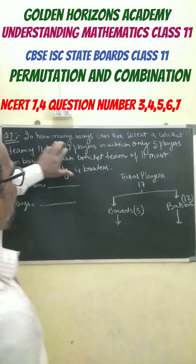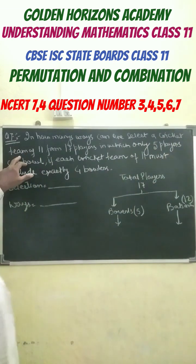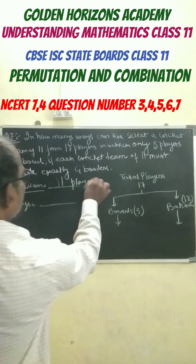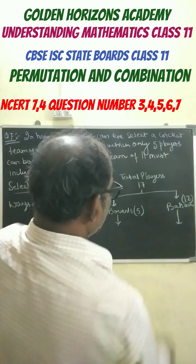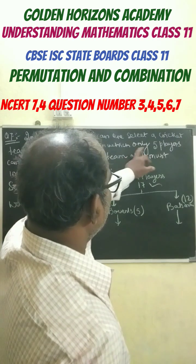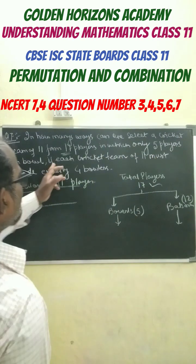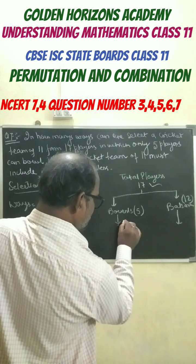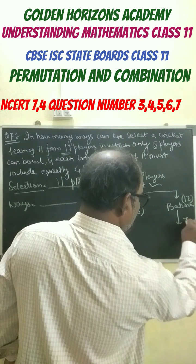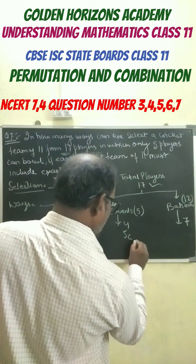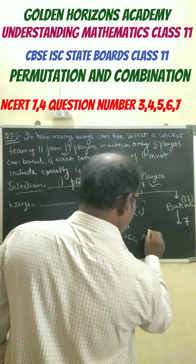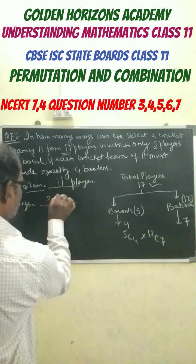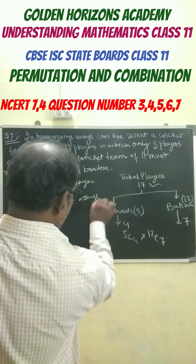Our next question: in how many ways can one select a cricket team of 11 players? Total number of players is 17, in which only 5 players can bowl. If each cricket team of 11 must include exactly 4 bowlers, then it should have 7 batsmen. So this can be written as 5C4 times 12C7. If you multiply this, we get exactly 3,960 ways.